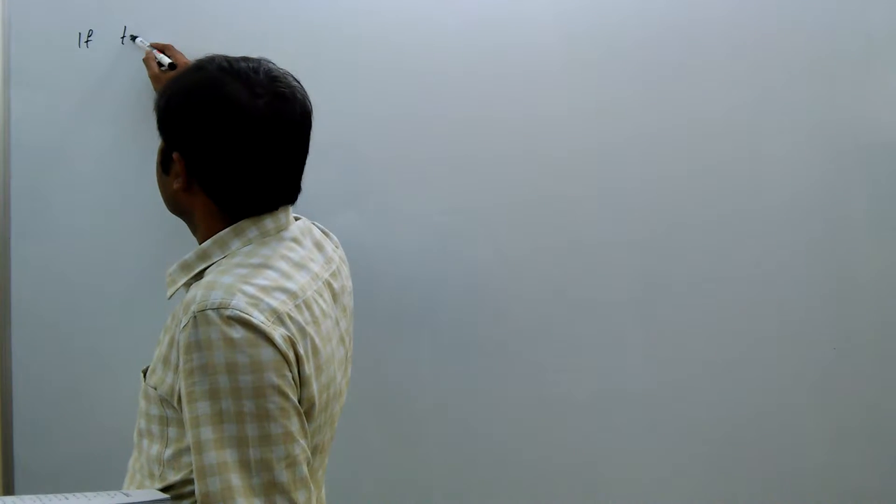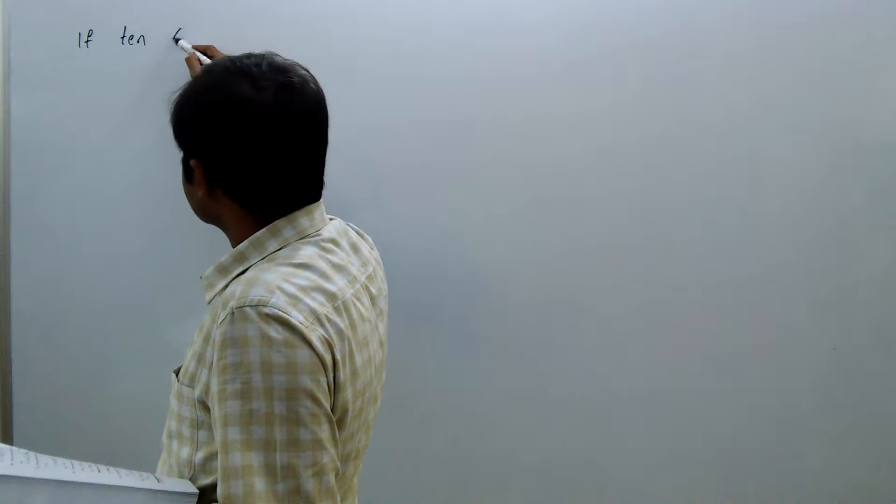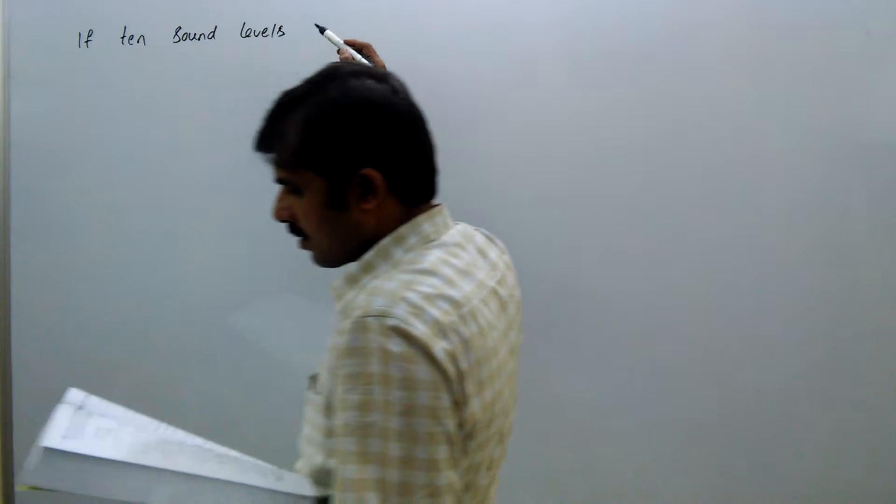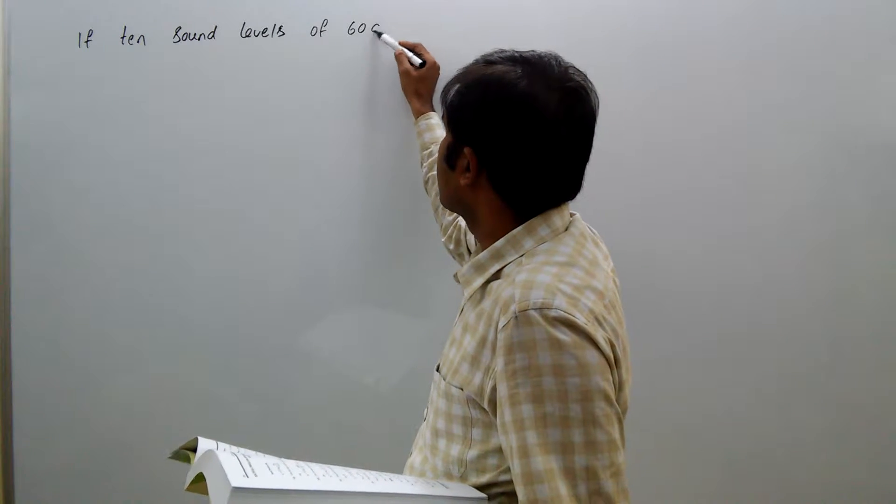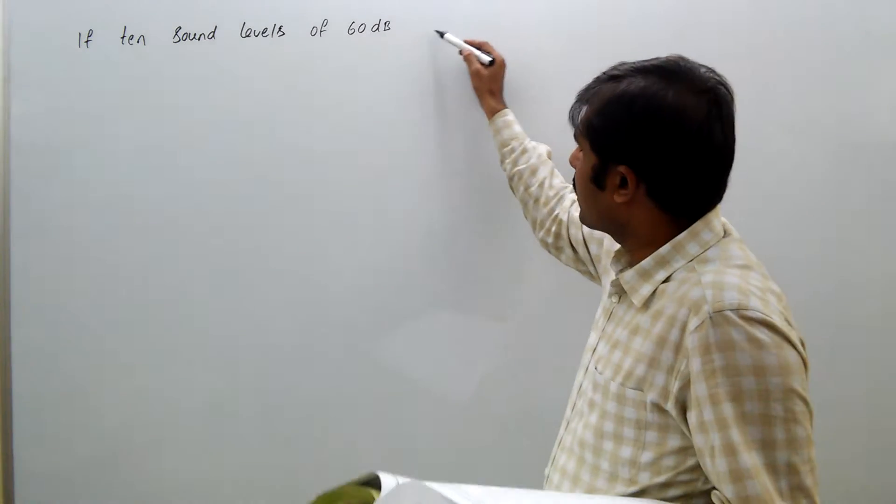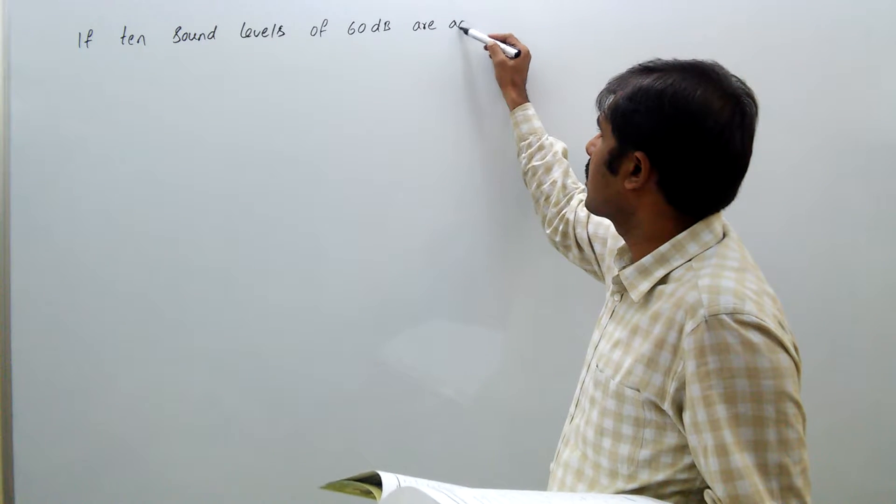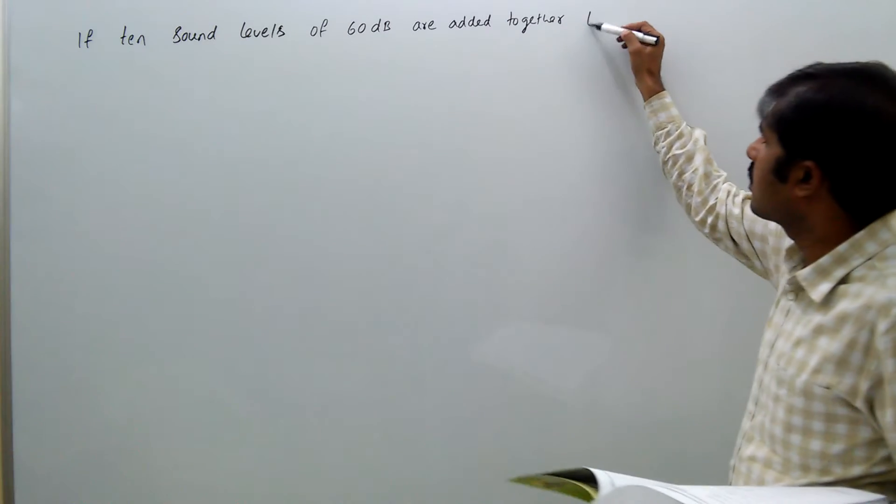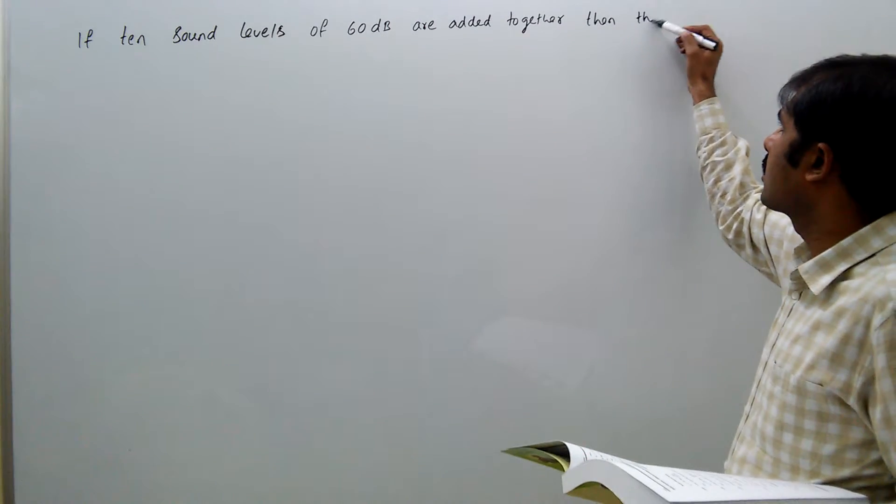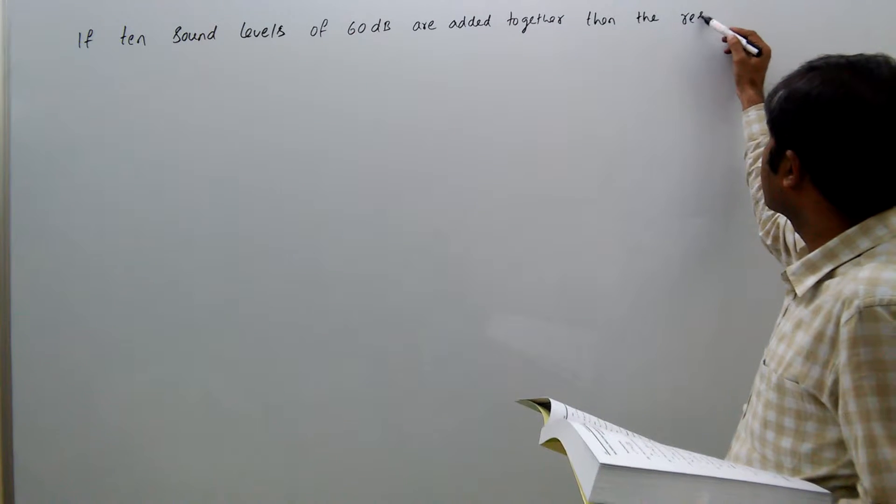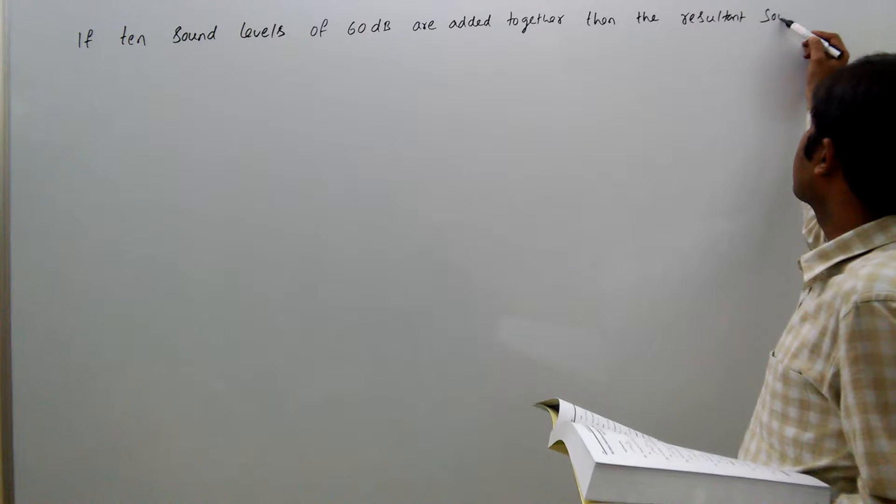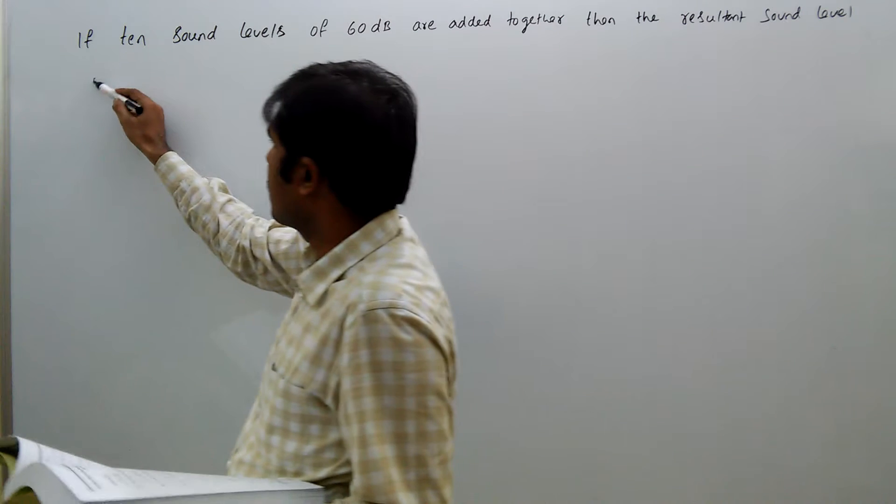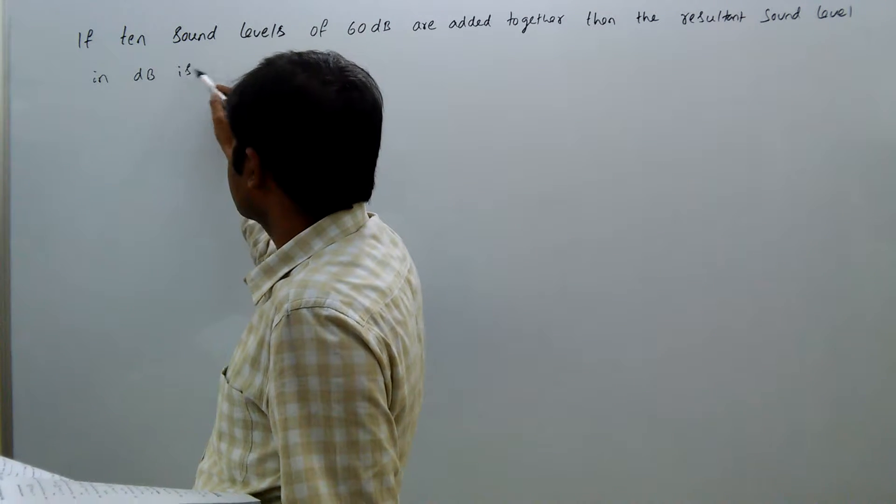If 10 sound levels of 60 decibels are added together, then the resultant sound level in decibels is...